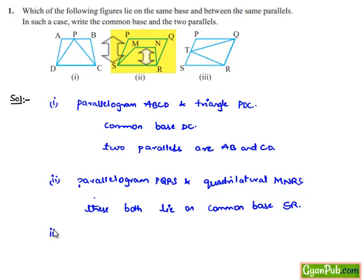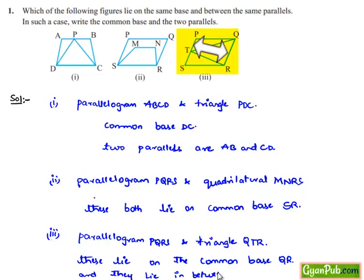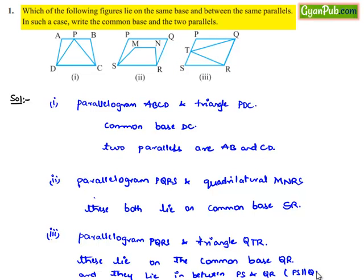Now, moving on to the third part. Here, we have two figures: parallelogram PQRS and triangle QTR. These lie on the common base QR and they lie between two parallels, that is PS and QR. Here, we know that PS is parallel to QR in a parallelogram.